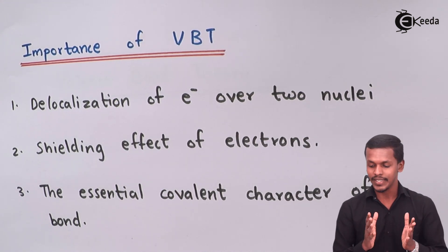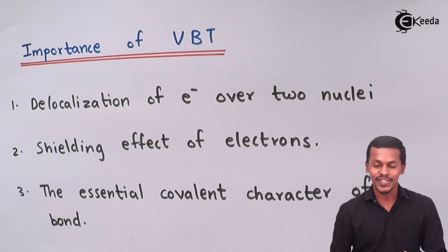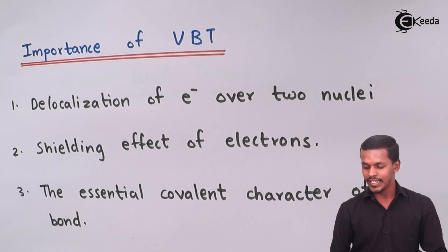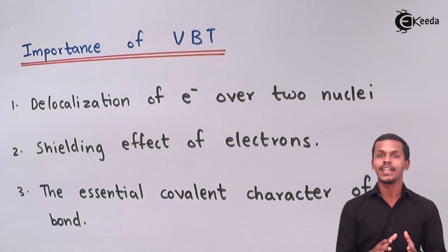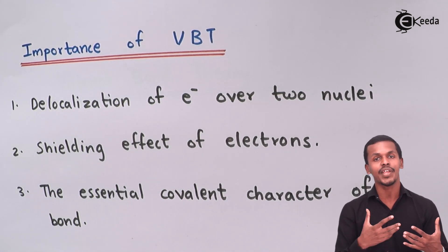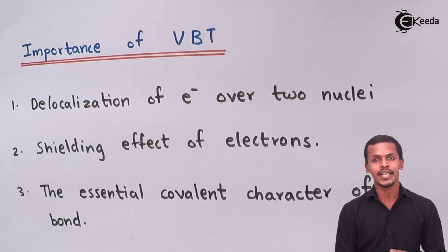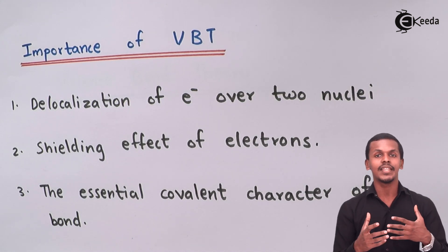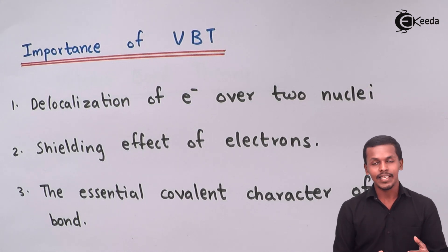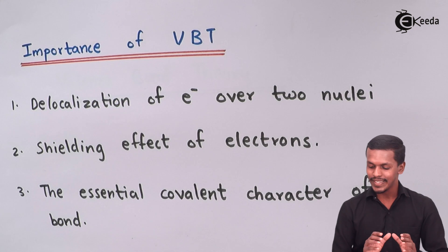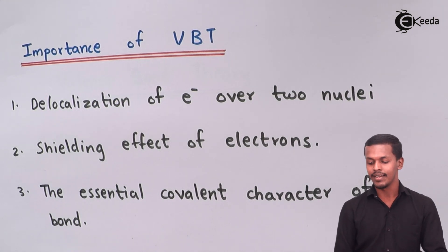These are all important aspects explained by VBT. The next importance is the essential covalent character of the bond. VBT clearly expresses that a covalent bond is formed only by the sharing of electrons. When two atoms combine, the number of unpaired electrons determines their valency, and that is how they form a covalent bond. This was clearly indicated by the valence bond theory.